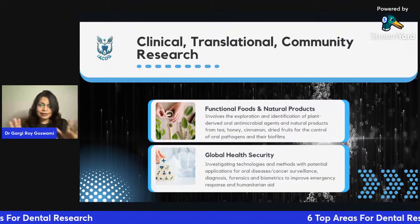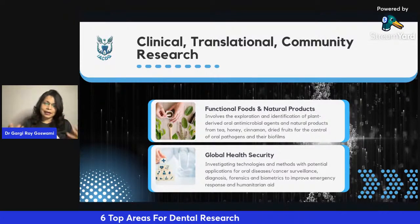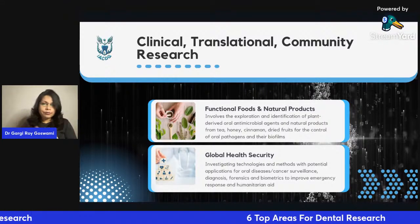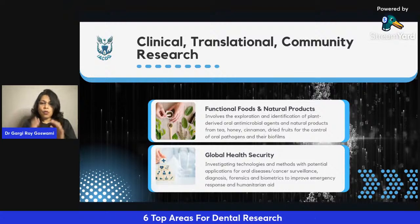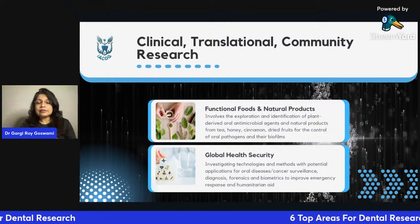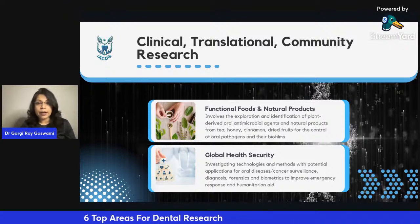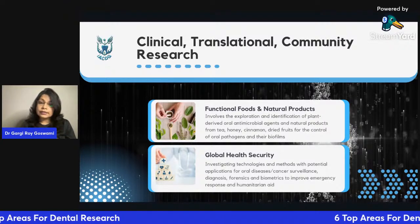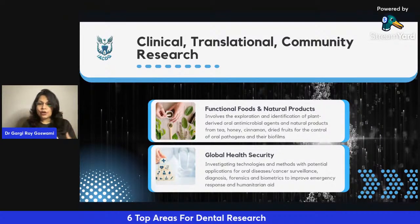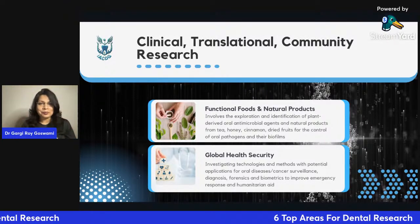Going to the third broad category — clinical translational and community research. Today I'll give you two offbeat examples where a lot of work is happening. One area is functional foods and natural products, which involves the exploration and identification of plant-derived antimicrobial agents and natural products like tea, honey, cinnamon, and dried fruits, which are being tested to see how they can be used to control oral pathogens and their biofilm formation.